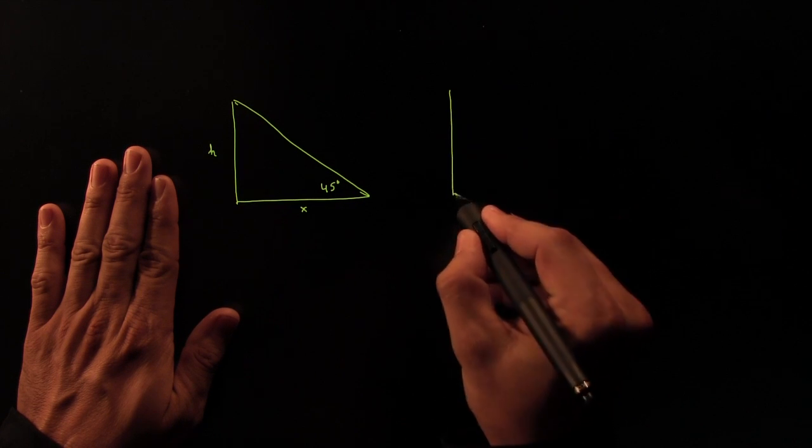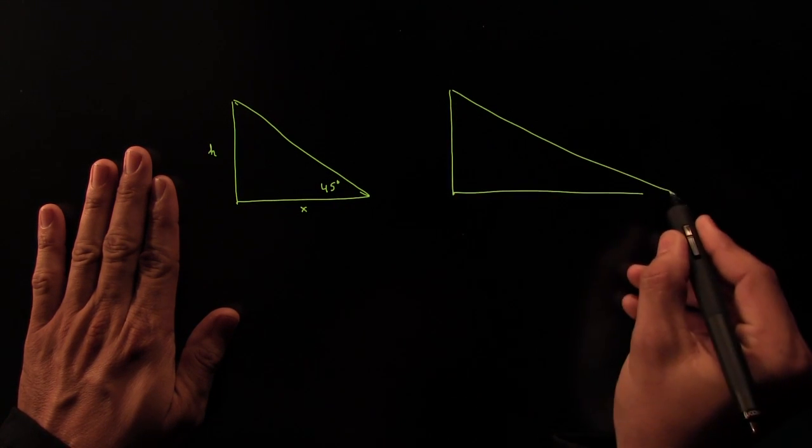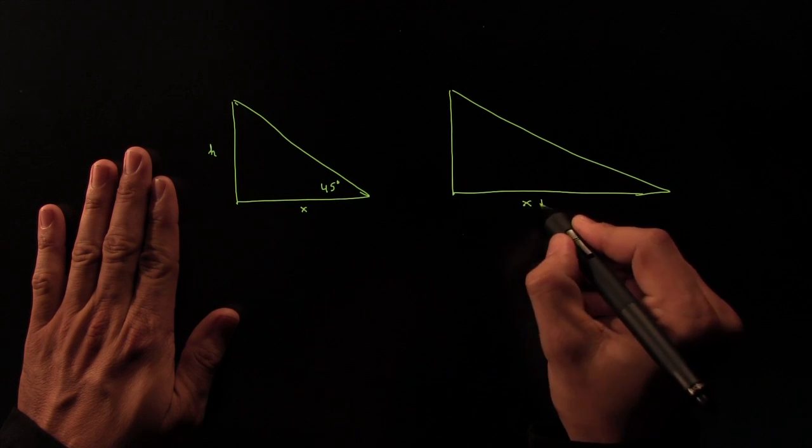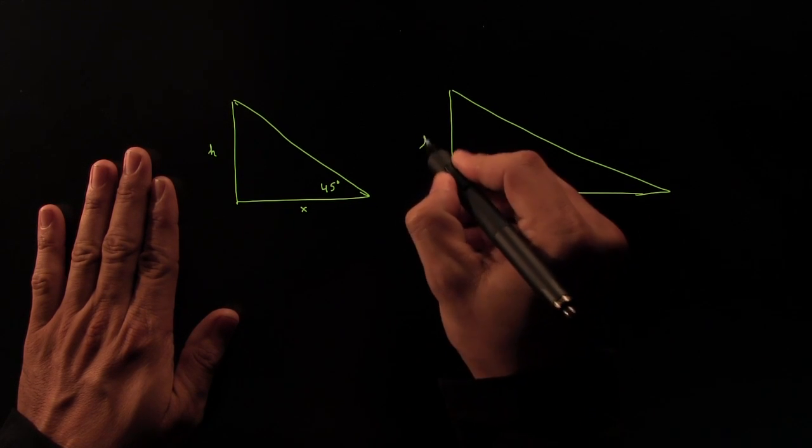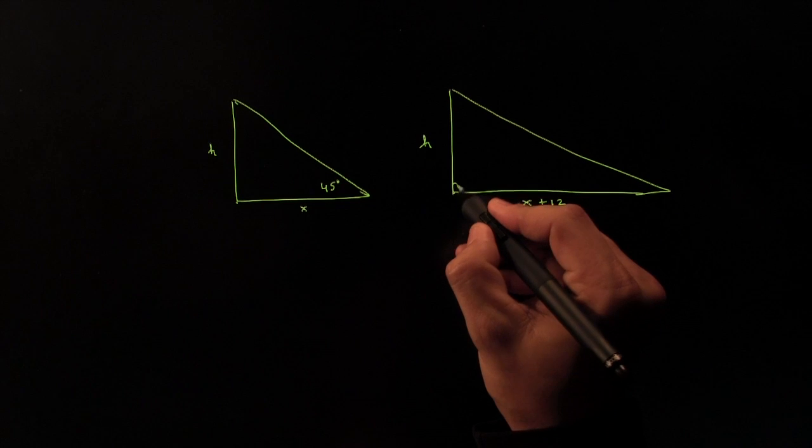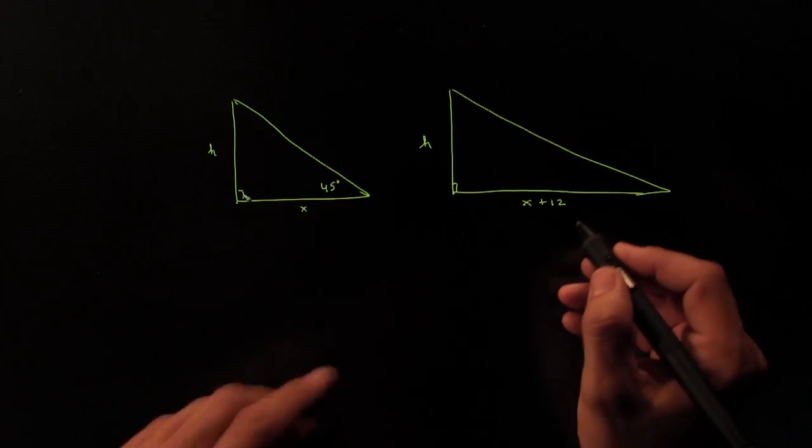The second picture was a little bit longer on this side. In fact, it was X plus 12 feet. And the height of the tree hadn't changed, presumably. And we'll assume that the tree is upright, still H.